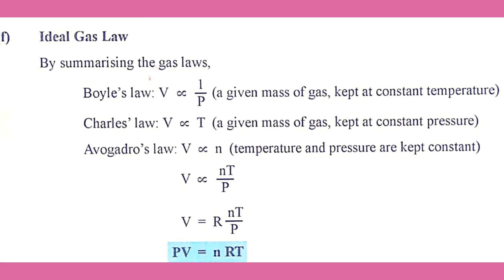Ideal gas law, by summarizing the gas laws: Boyle's law — a given mass of gas kept at constant temperature. Charles's law — a given mass of gas kept at constant pressure. Avogadro's law — volume varies with n when temperature and pressure are kept constant.